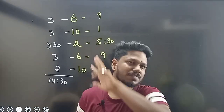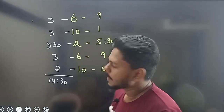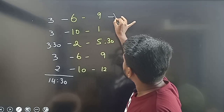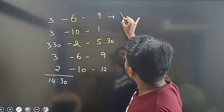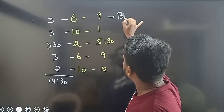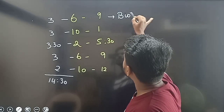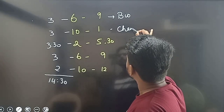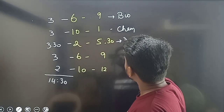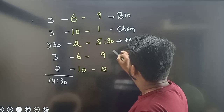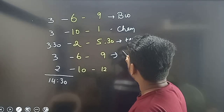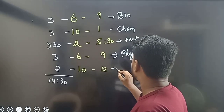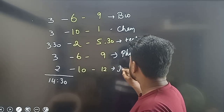We have a 3-hour time block. For example, from 6 to 9. In that time, Biology — maybe this slot is 100% different. This is Chemistry. In another time block, a Test. In another time block, Physics. And in another time block, Revision.